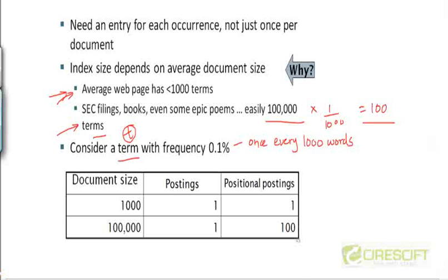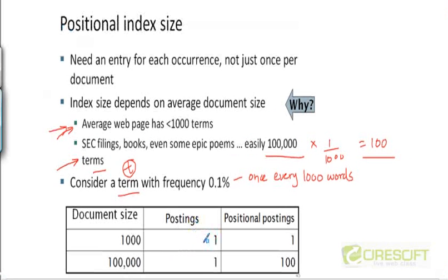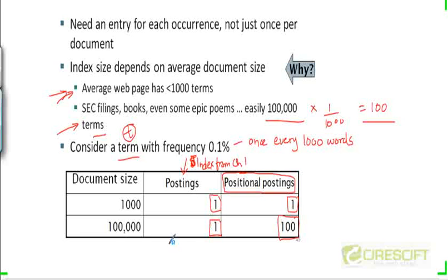You can see that if you just had the standard inverted index, the index from chapter one, we would have just had a single posting for both of these documents. But now when we add a positional index, this will still remain one because we still have one single position at which that term is occurring. But now we are going to have a hundred occurrences of the term in the second document.